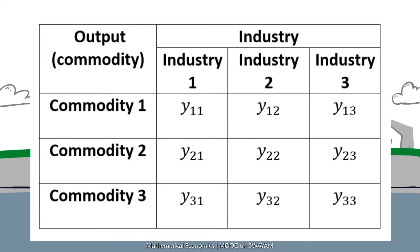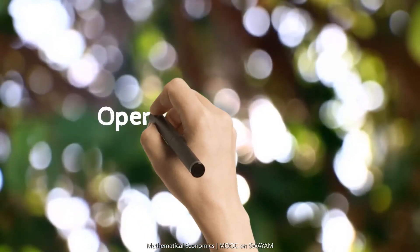There is no final demand and all that is produced in the industries is being used up by the industries. So the industries are both the buying industries and the selling industries. Such a model is a closed input-output model.